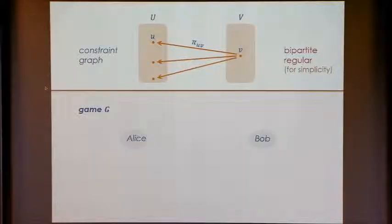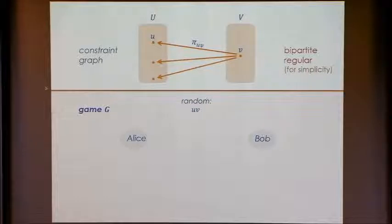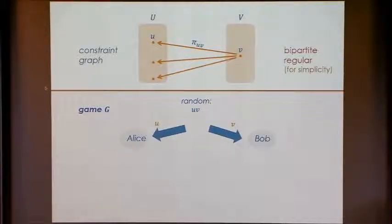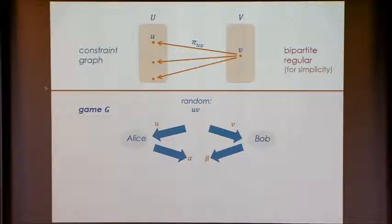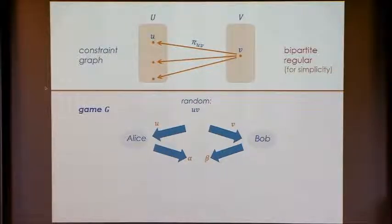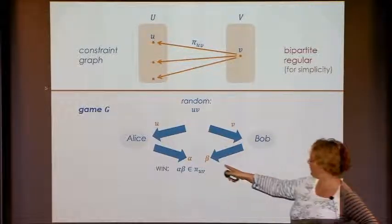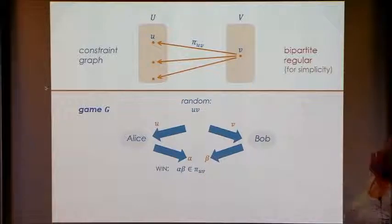The semantics of the game are as usual. There are two players, Alice and Bob, and a verifier. The verifier selects an edge uv at random, sends u to Alice and v to Bob. Alice responds with some answer alpha, Bob responds with beta. Based on the constraint pi_uv, the verifier decides if they win the game — if the pair alpha-beta is in the constraint, they win.